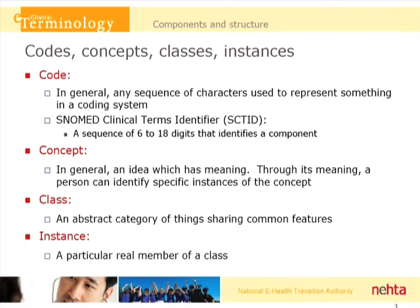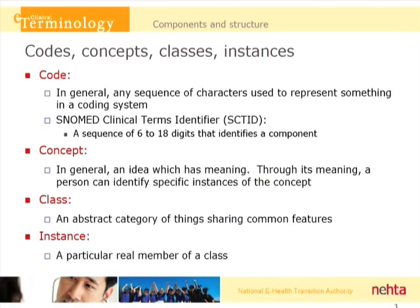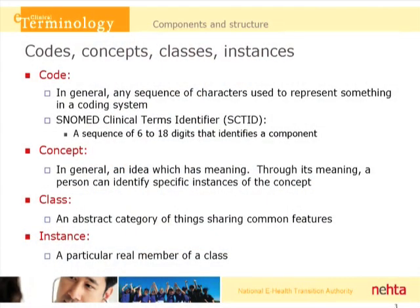It's important to make a distinction between a code, a concept, a class, and an instance, so when we talk about SNOMED we understand which of these things we're referring to. The code is just a sequence of characters used to represent something in the coding system. SNOMED identifiers are called SCTIDs, or SNOMED Clinical Terms Identifiers, and they're a sequence of between 6 and 18 digits that identify the components of SNOMED. Concept codes represent meanings or concepts — a concept, in general, is an idea which has meaning, and through its meaning a person can identify specific instances of the concept.